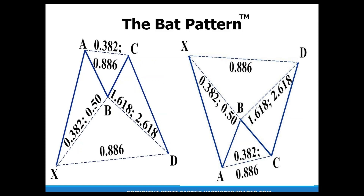The BAT pattern looks like this M structure for the bullish pattern. Your B point is typically at a 50% level — the BAT pattern can be as low as 38.2%, and we'll get into that in a second. But the bearish structure, this W formation, has X as the highest point and A as the lowest. You form the B point at that 50% level, and that sets up this eventual 886 retest. The C point cannot take out A — that's the definition of the W structure.